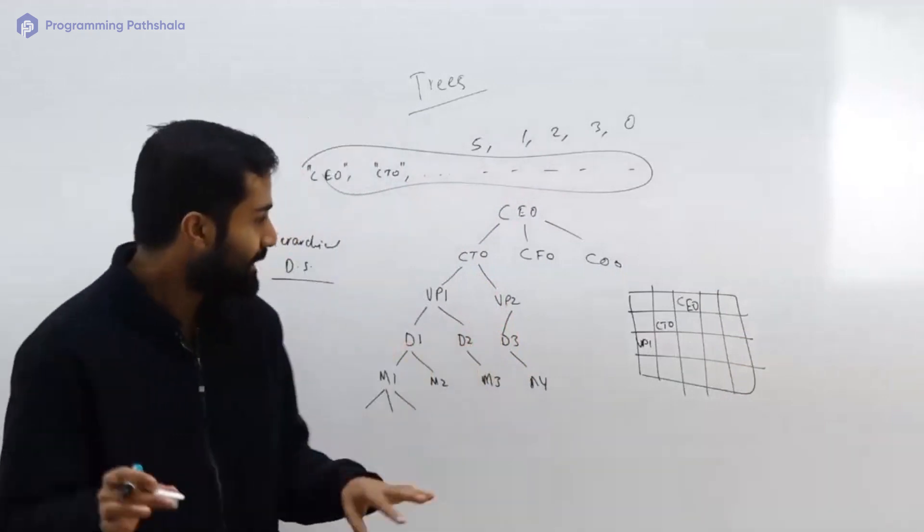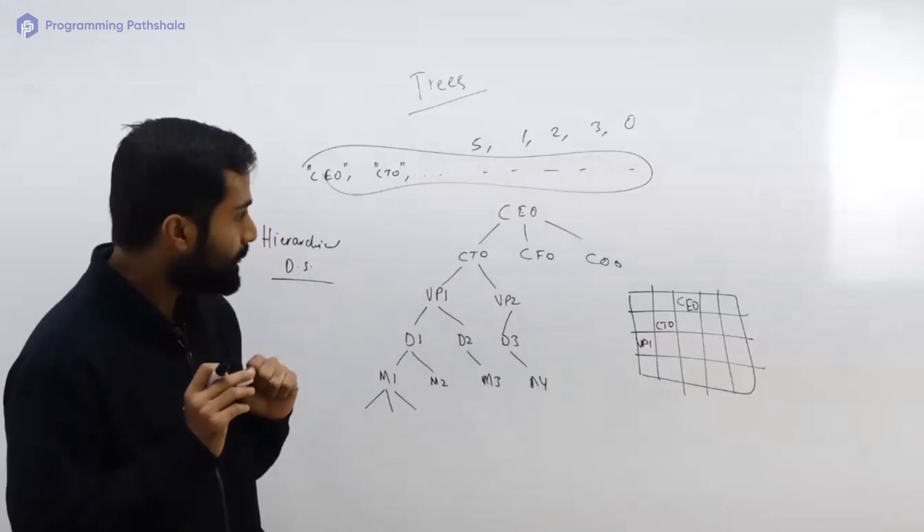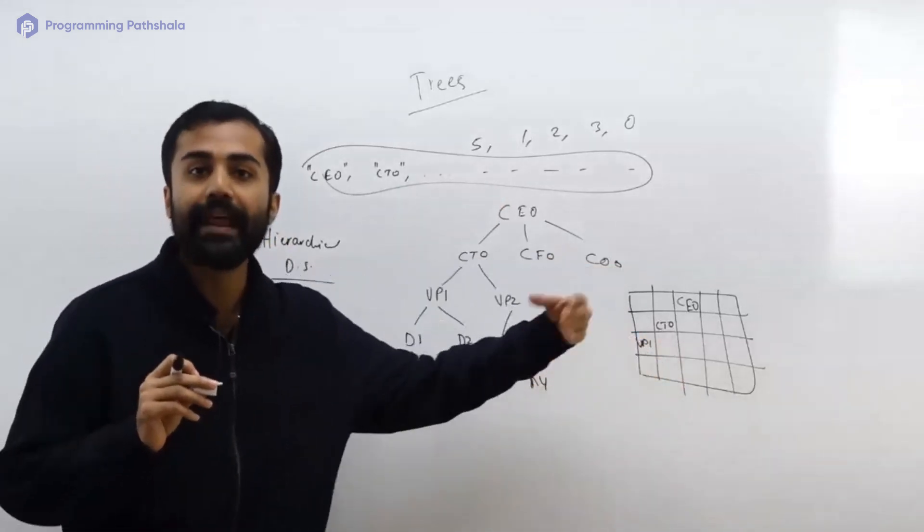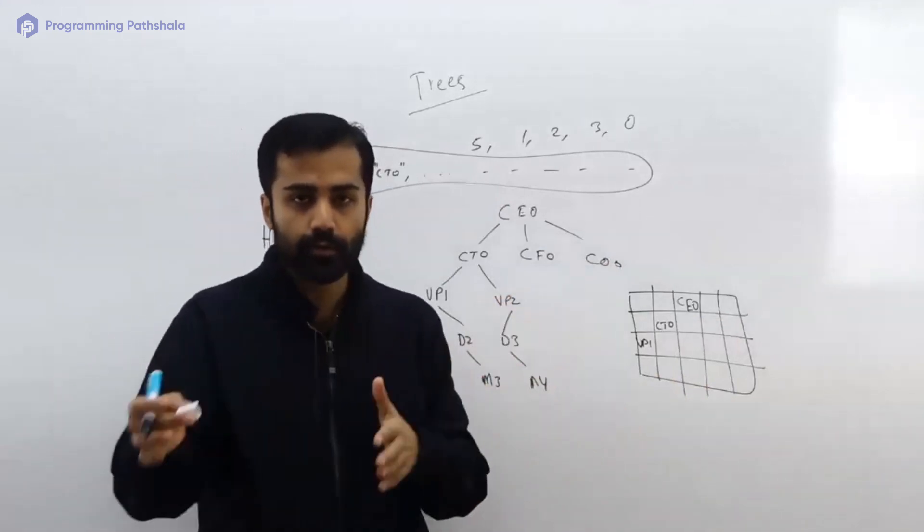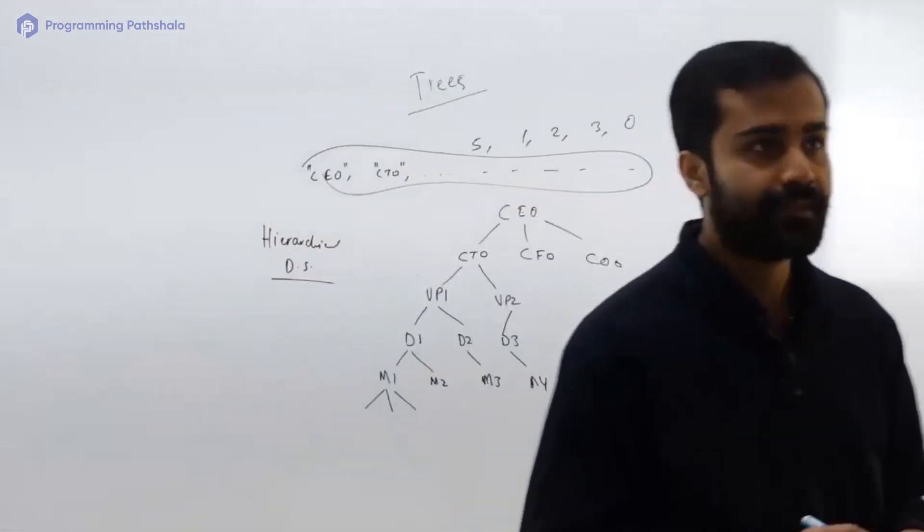So in case of a tree, what happens is that the structure is not really fixed. You do not really know how many children CEO will have and how many grandchildren it will have. So whenever you are planning to use array or 2D array or anything like that which has a fixed storage, it just does not make sense.